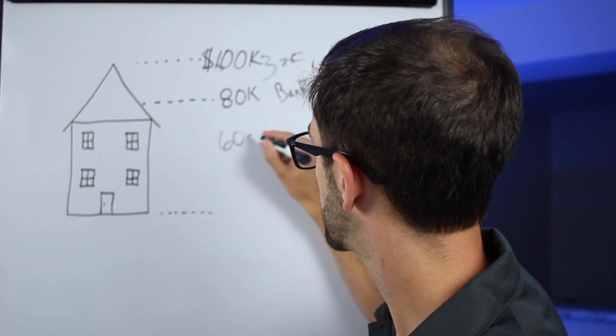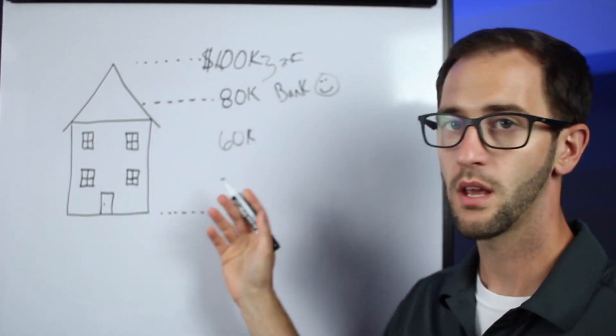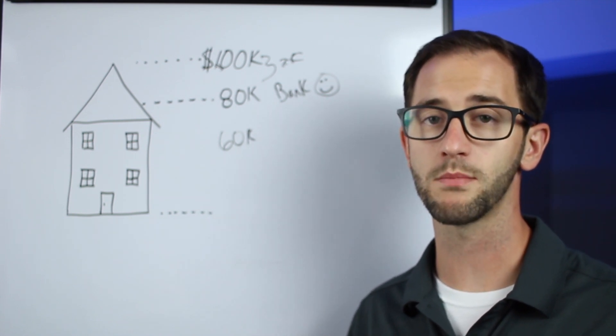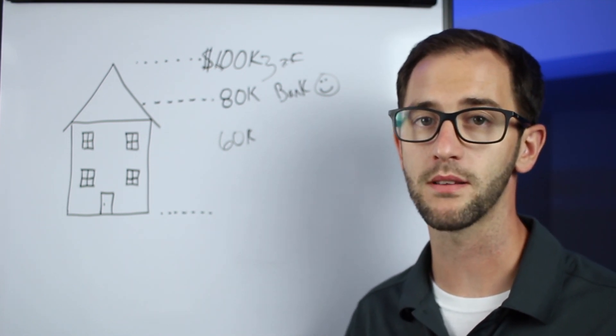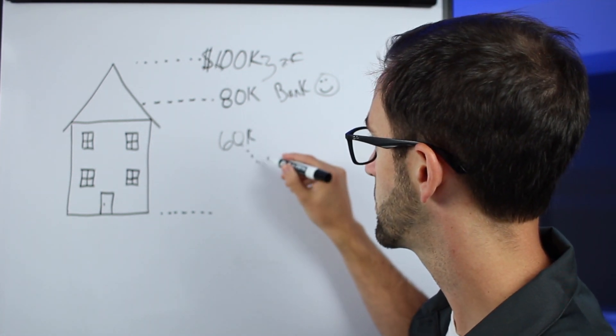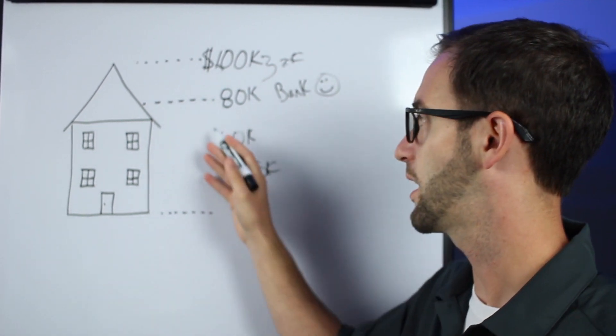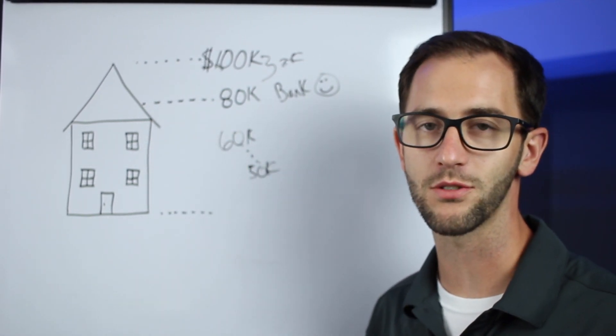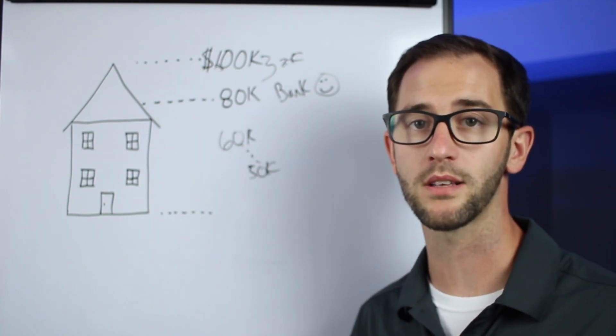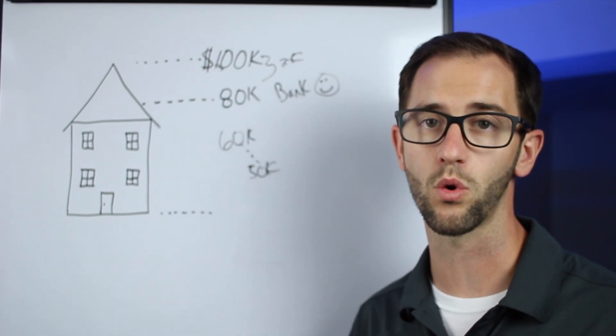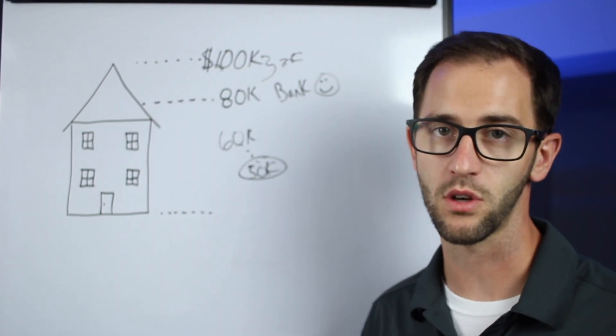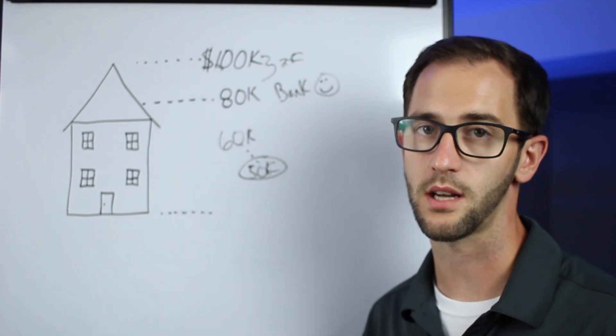So you currently when you purchased the home had a sixty thousand dollar debt against the property. So you started here at 60K. And since a couple years have gone by, let's just assume that over principal pay down and you just making your normal mortgage payment, you've actually paid this property down to fifty thousand dollars.